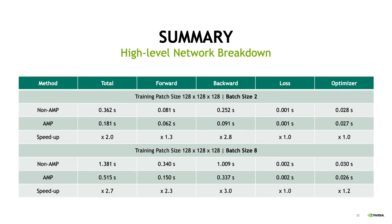Now we show the high-level network breakdown. We decompose each iteration into four sequential components: forward path, backward path, loss computation, and optimization. From the table, we can see that loss computation and optimization take almost the same time with or without AMP. The major efficiency gain from AMP comes from the forward and backward paths, and the overall training time per iteration is two times faster with AMP compared to without AMP.